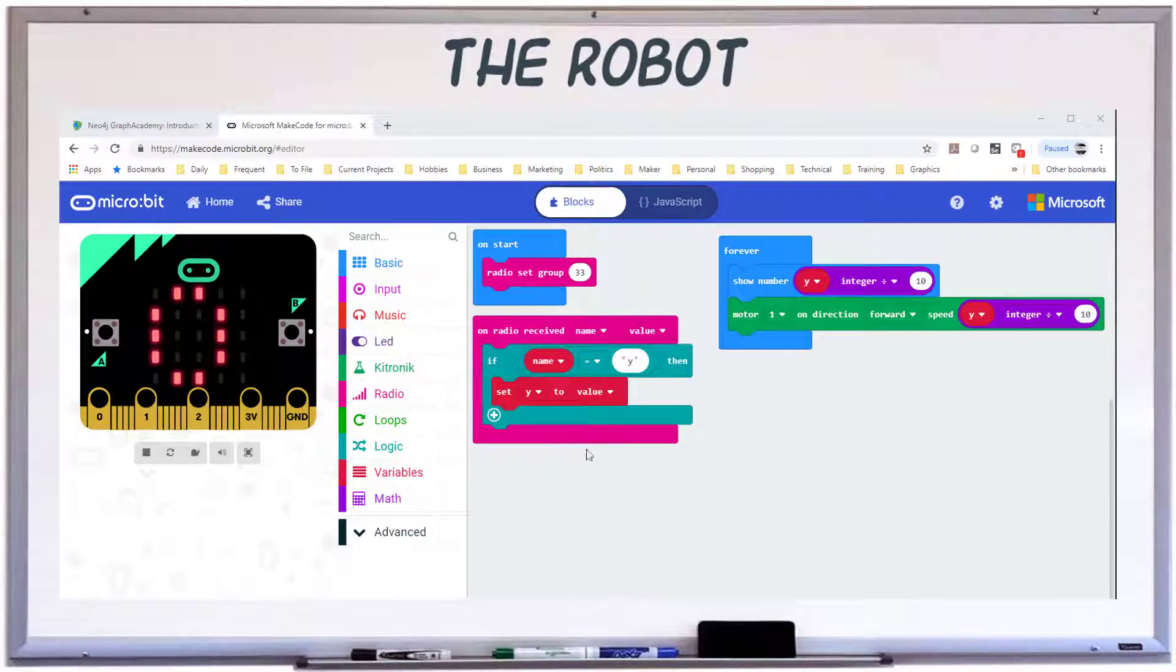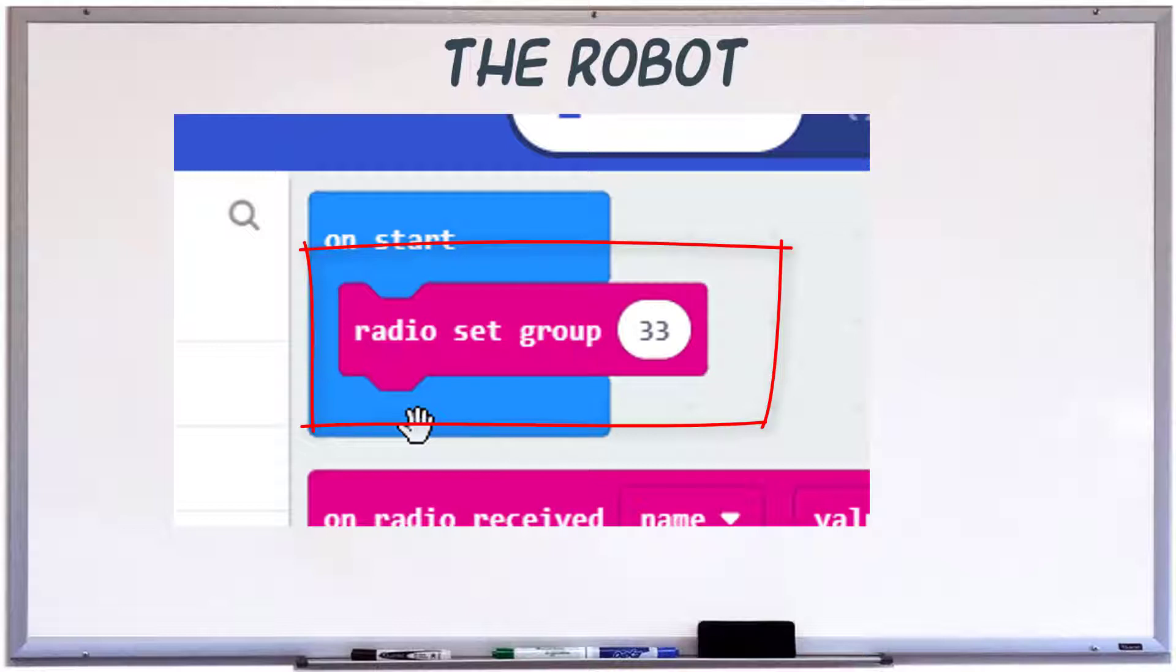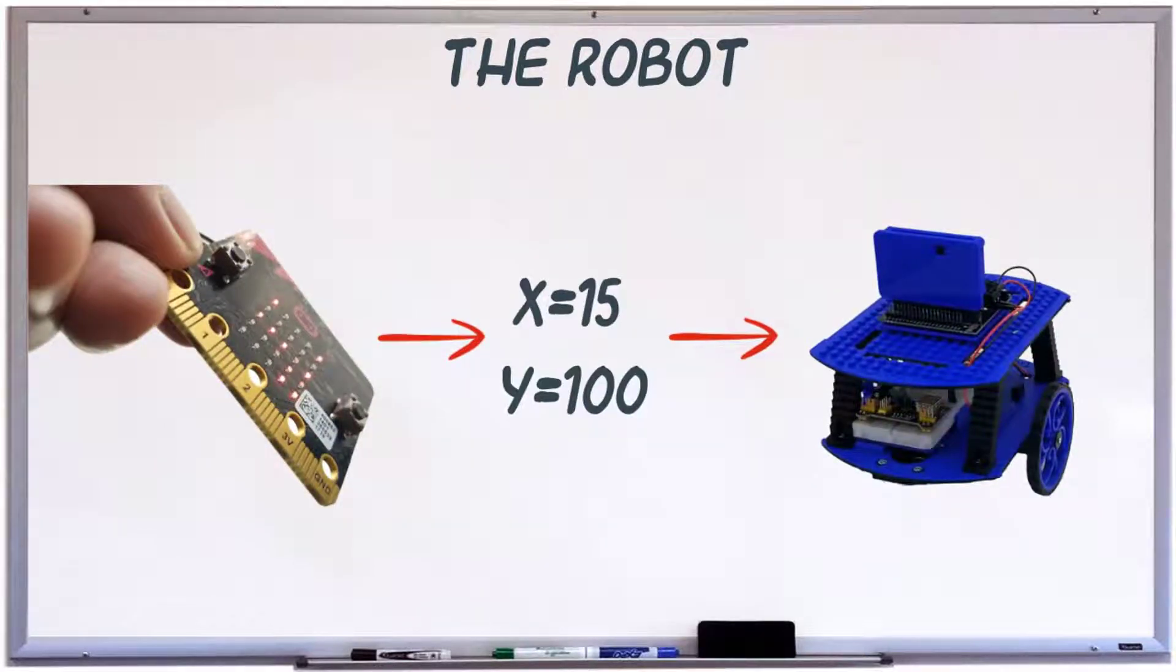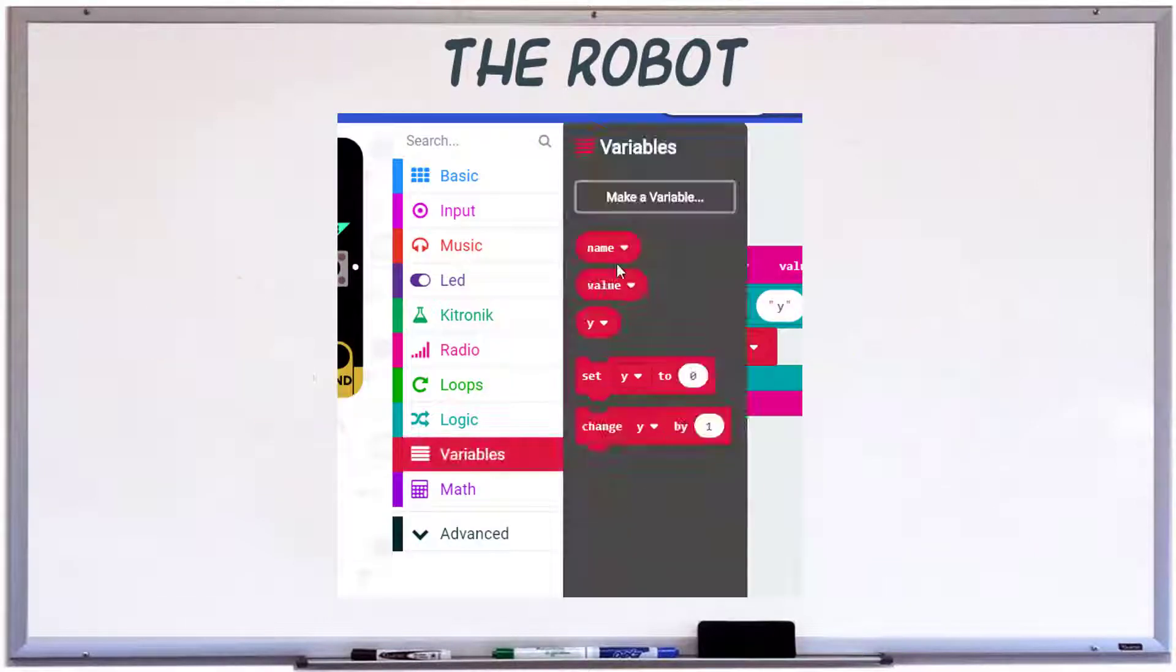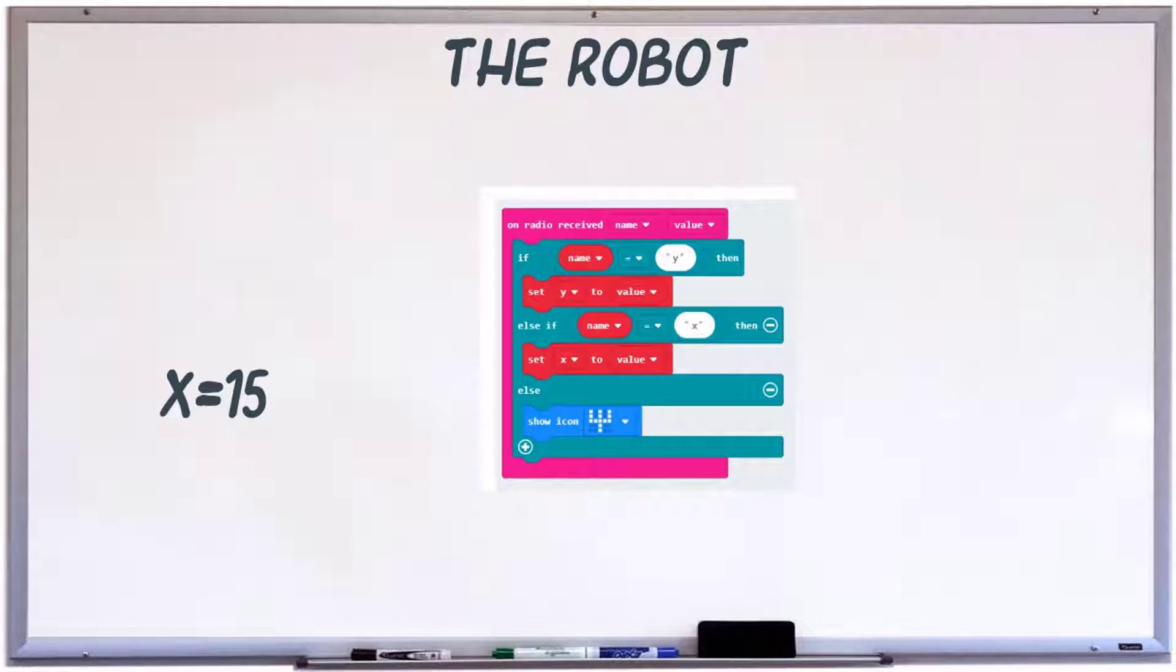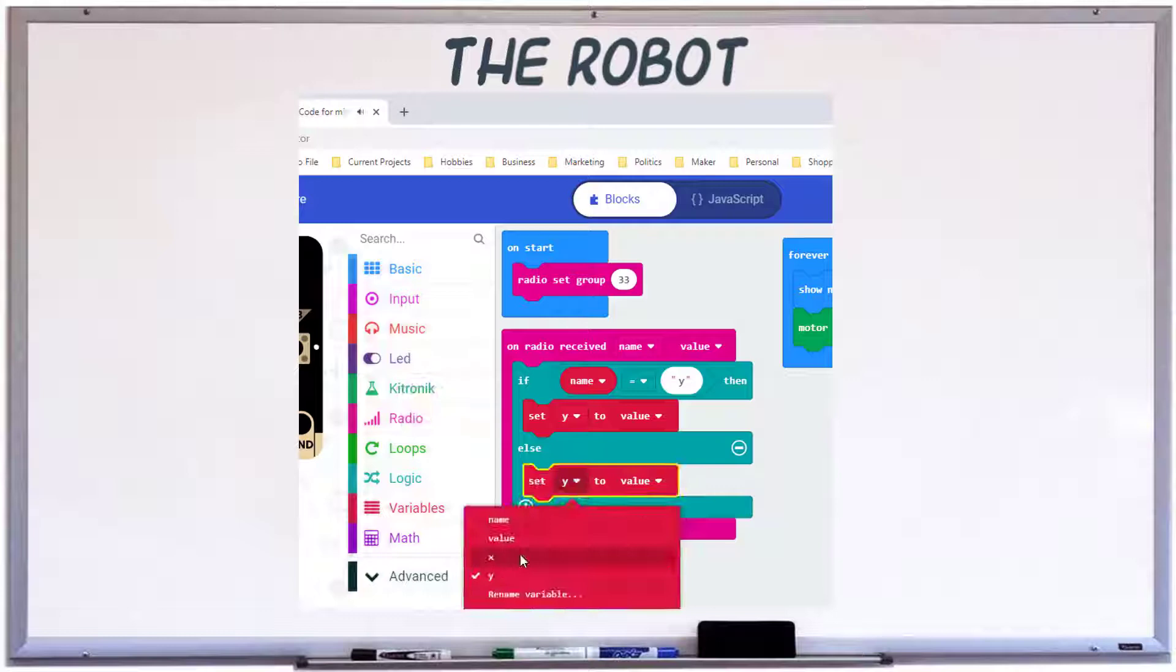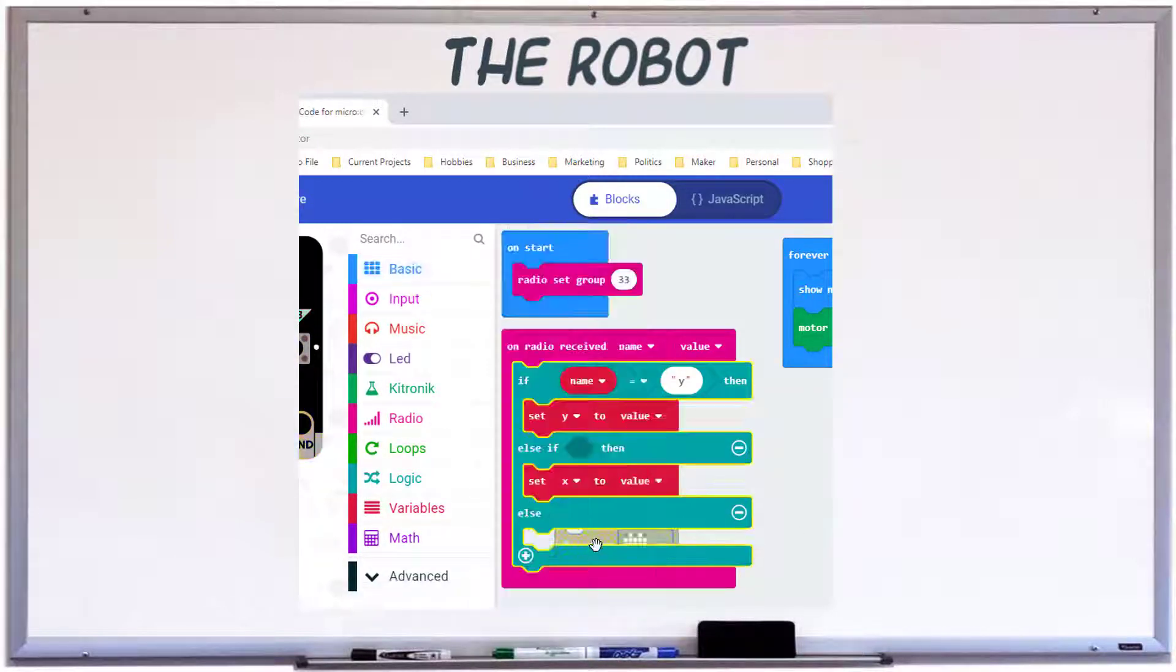Next, we'll program the robot. Set the radio frequency to the same number as the remote. Here we need to evaluate the values sent from the remote like x equals 15 and y equals 100. Create two variables called x and y to hold these values. As the values are coming across the serial port, we need to evaluate whether it's an x or a y, so we'll use the if-then block for that. Clicking the plus button adds an else block to the if. Set the value to y if the name is y and to x if the name is x.